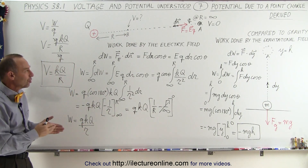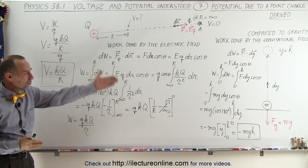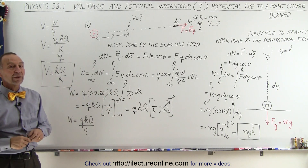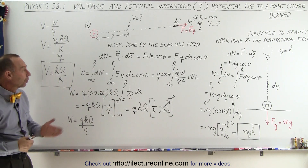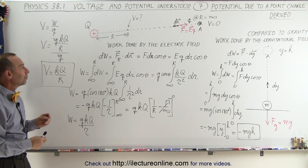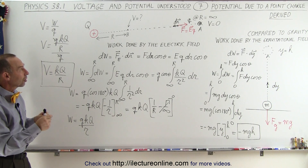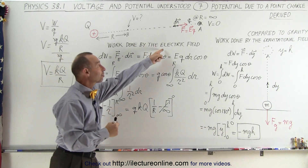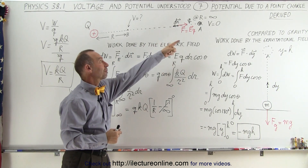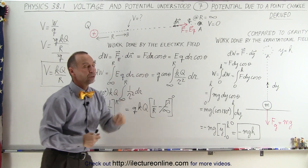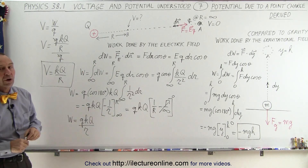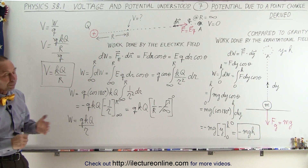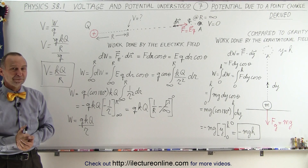The same technique we used to find the work done by the gravitational force is used here for the work done by the electric field by moving a small charge from infinity to the point r away from the point charge. And that's how it's done.